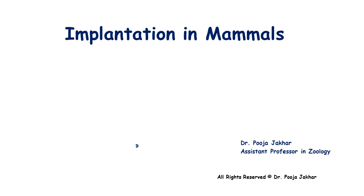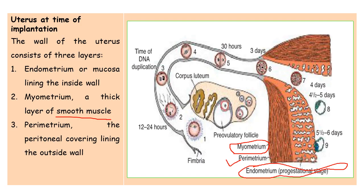Today's lecture is about implantation in mammals, which is a highly organized process that involves an interaction between a receptive uterus and the competent blastocyst which is going to implant in the uterus.